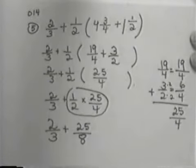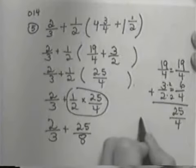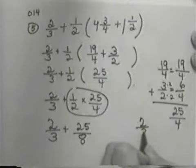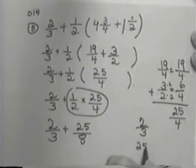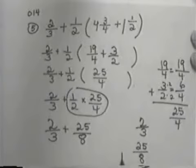And 2 times 4 gives me 8. So, I end up with 25/8 when I do that. And now, I'm down to my last step, which is adding. And I can't add unless I have a common denominator.